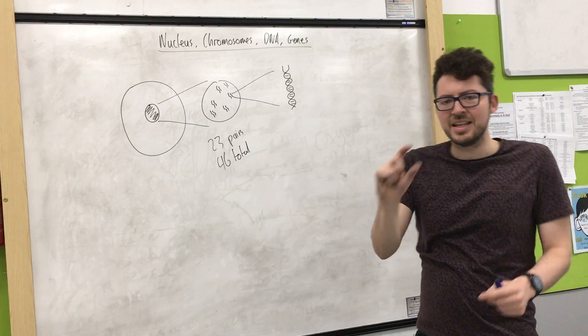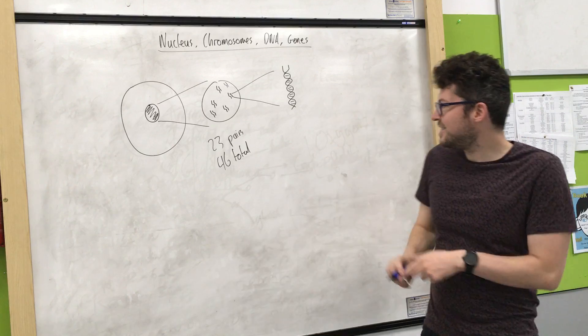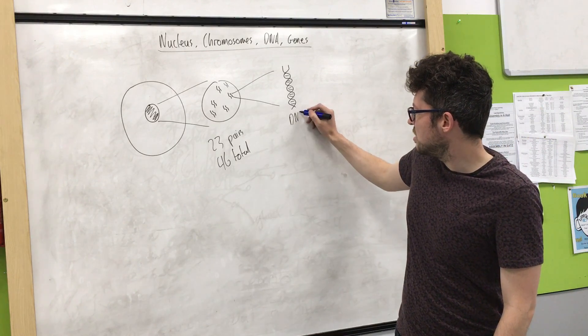What that means is there are two strands, and they are spun into a spiral format. That's all. So that's our DNA molecule.